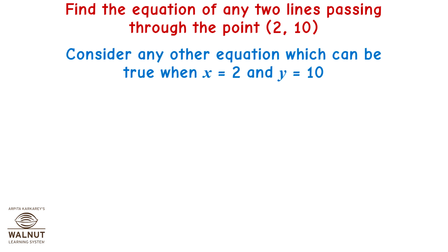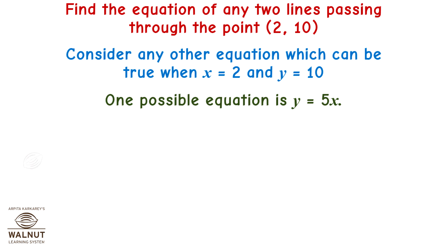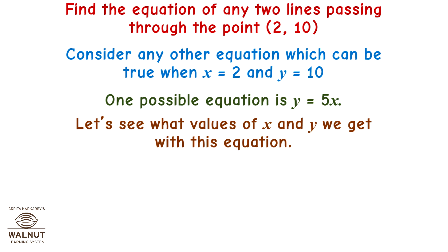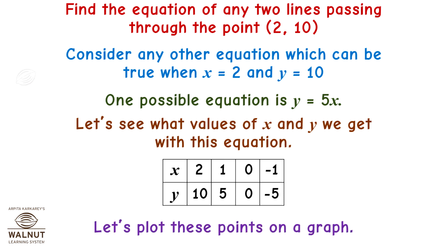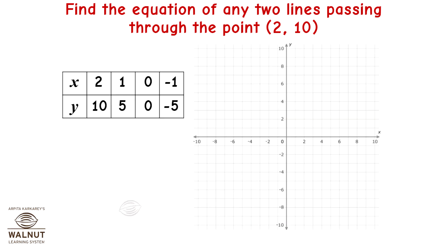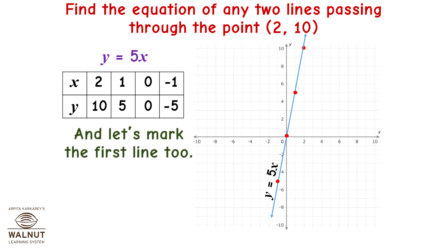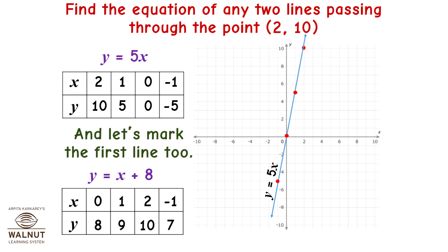Now let's try another equation through (2, 10). One possible equation is y = 5x. Points on this line: (2, 10), (1, 5), (0, 0), (-1, -5). Let's plot these points and draw a line through them. That gives y = 5x. And we also mark the first line y = x + 8.